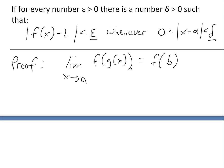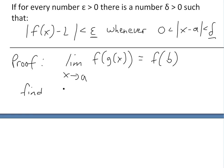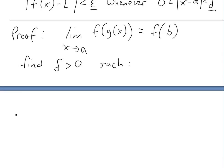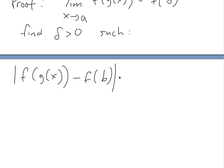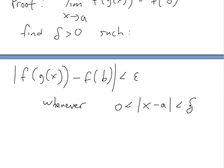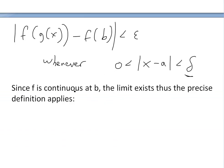Now, getting to the proof: we want to prove that the limit as x approaches a of f(g(x)) equals f(b), where b is the limit of g(x) as x approaches a — I just substituted b there to make it easier to write. To prove it, we need to find a delta greater than zero such that the precise definition applies: the absolute value of f(g(x)) minus f(b) is less than epsilon, whenever zero is less than the absolute value of x minus a and less than delta.